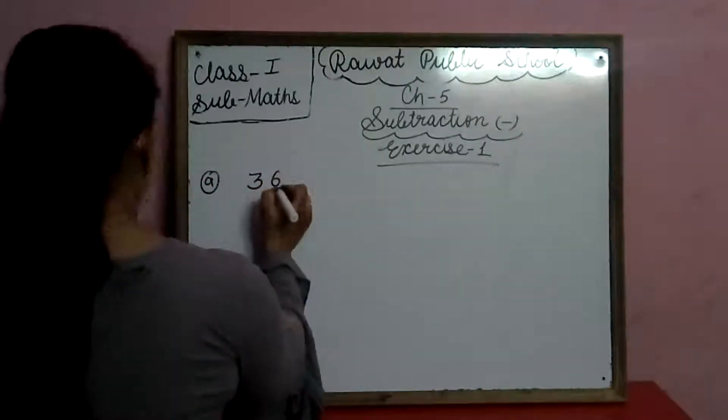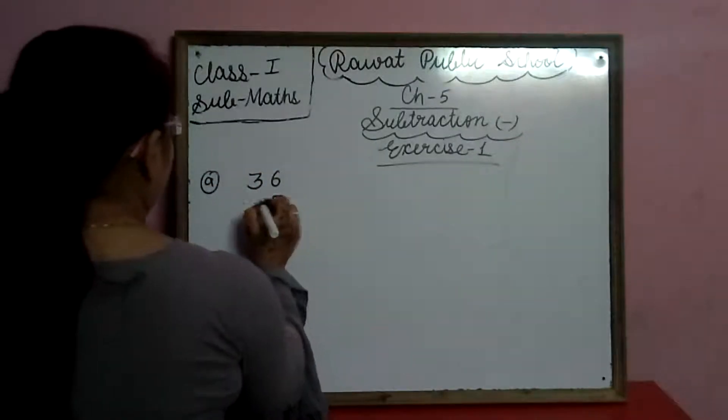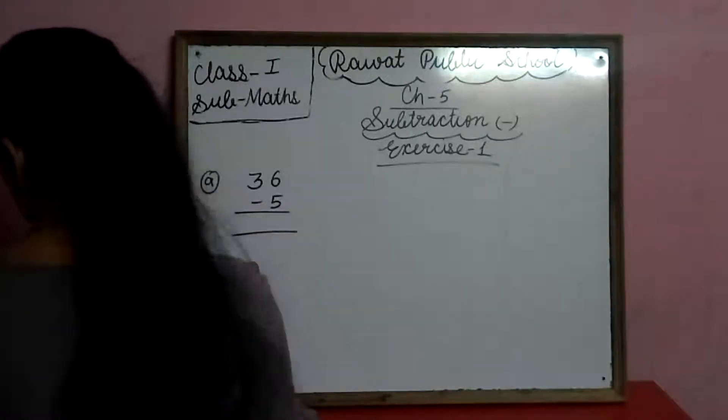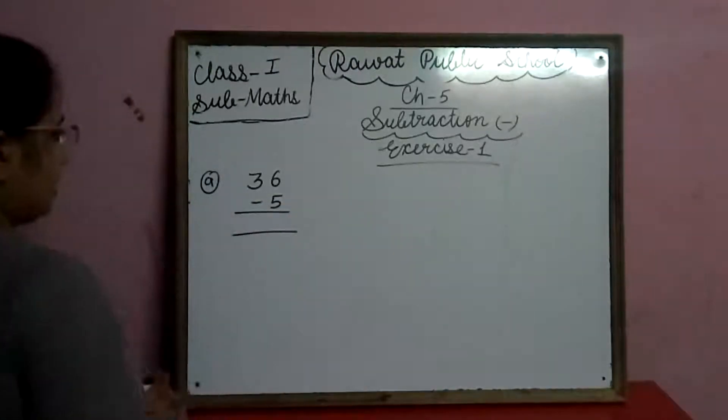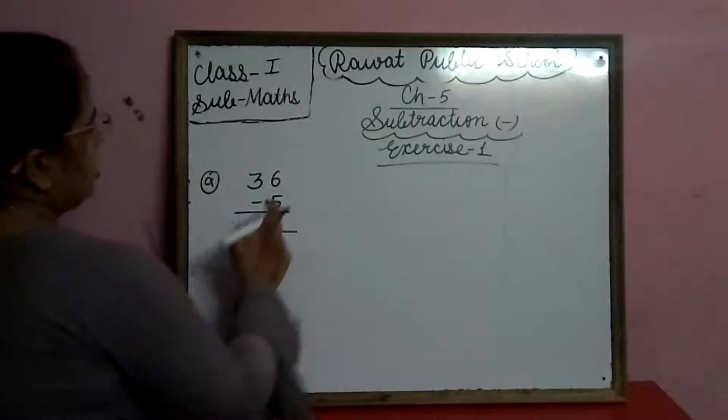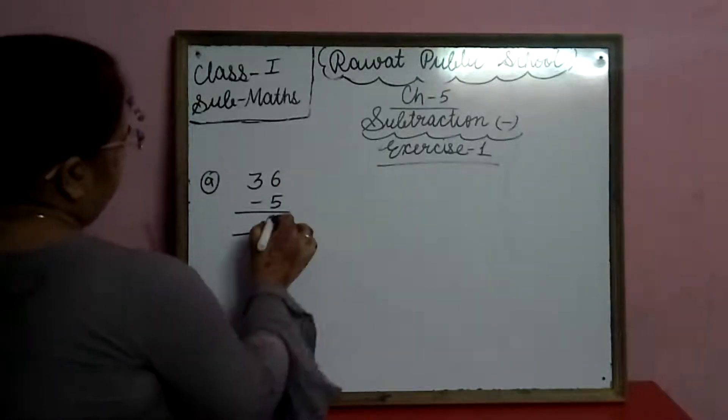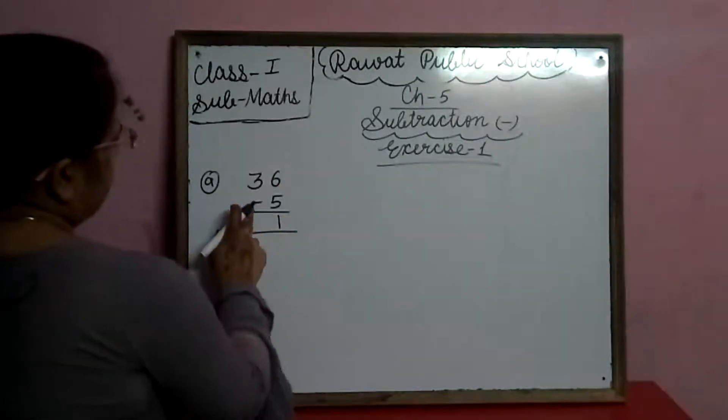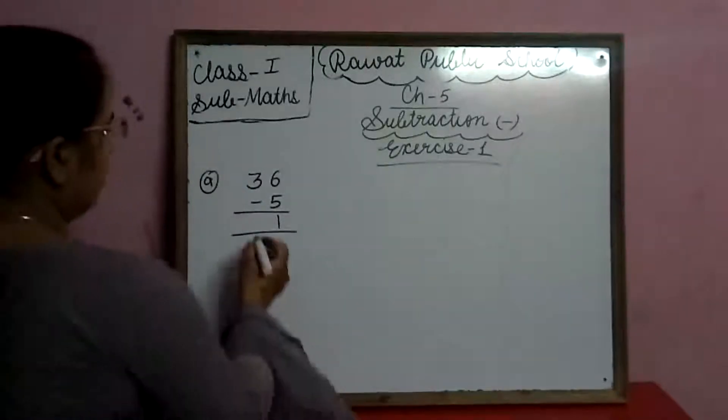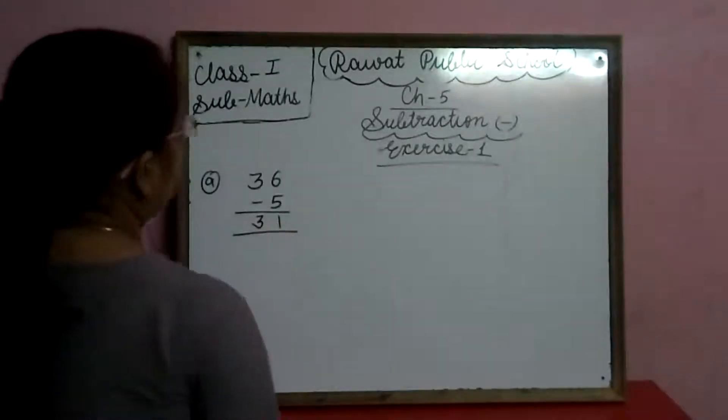36 may se hum 5 minus karengo. Kya agar ni 36 may se 5 less karengo. Okay, 6 may se 5 jayega to 1. Aap 3 ke niche koi digit nahi hai, to 3 hum as it is likhenge.